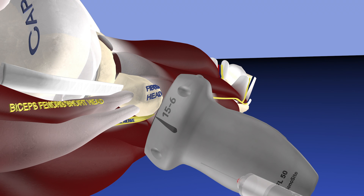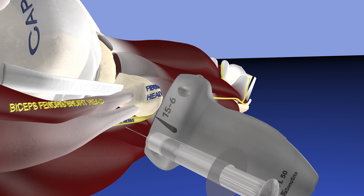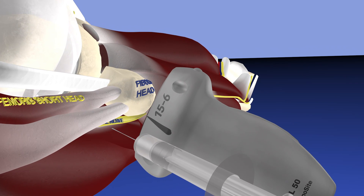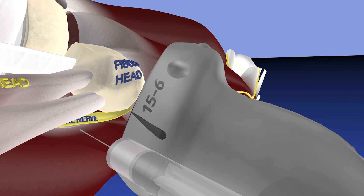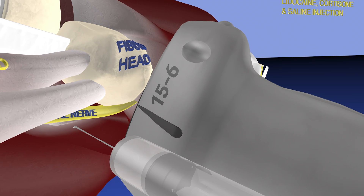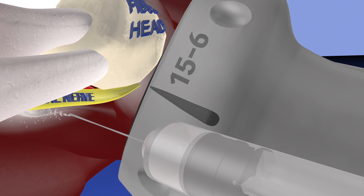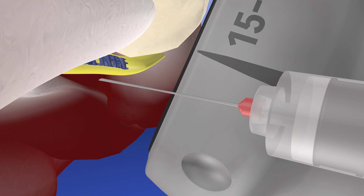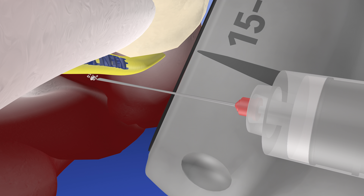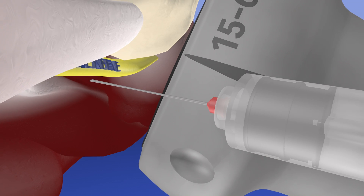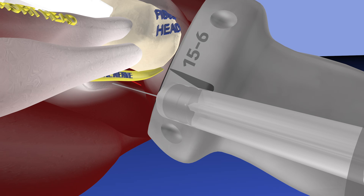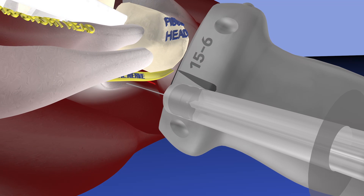Here we are approaching the common peroneal nerve with our syringe. We cannot see the needle during this procedure as the probe is essentially parallel to it, but what we can see is the motion of the tissue as a result of the needle. Here we are injecting the combination of cortisone, saline, and lidocaine around the common peroneal nerve.